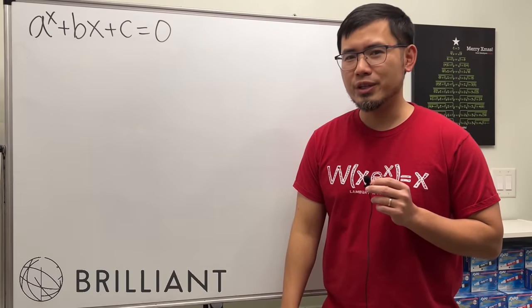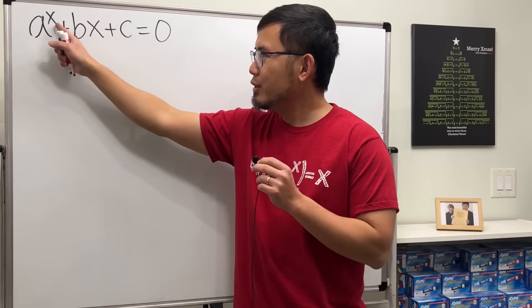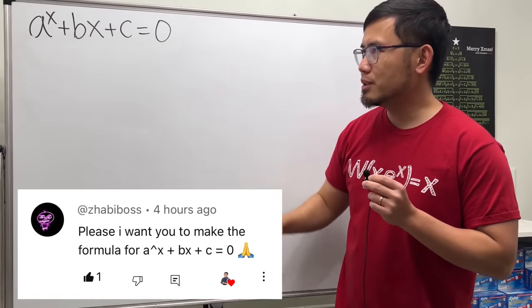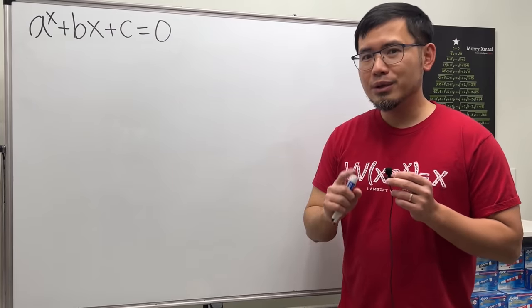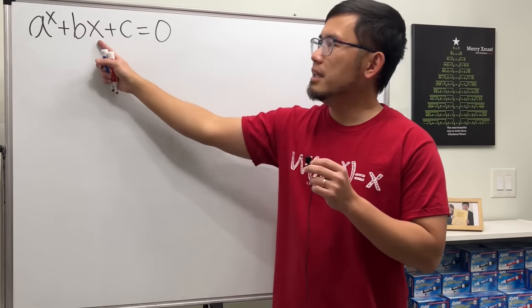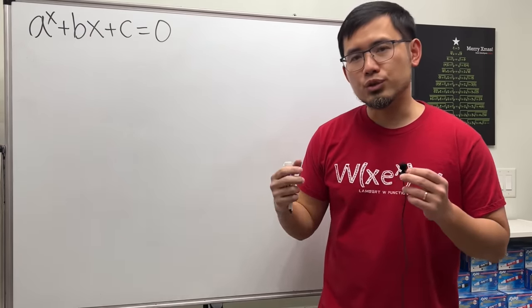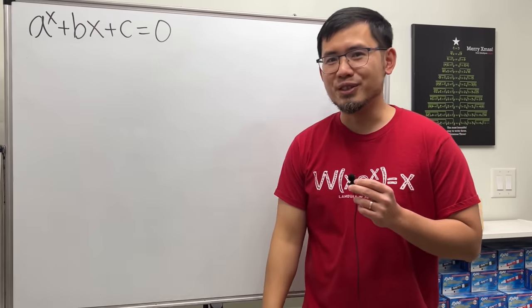This right here is not a quadratic equation, because we actually have a to the x power plus b times x plus c equals zero. So how do we solve this kind of equation? Well, the key right here is that we have the x in the exponent and then x being multiplied with the b. In this kind of situation, we can try to use the Lambert W function to help us out.